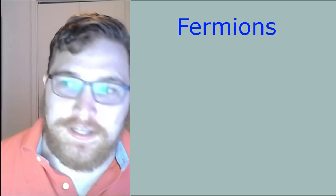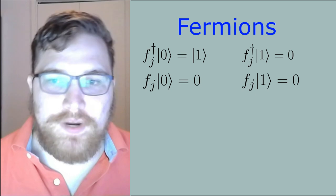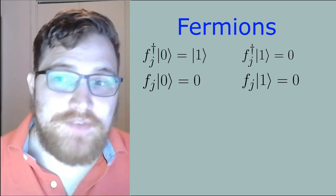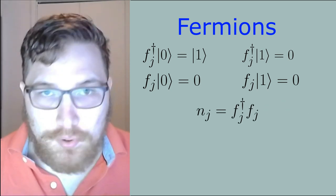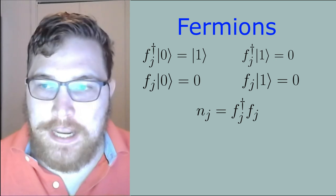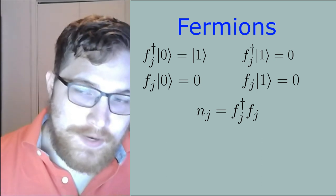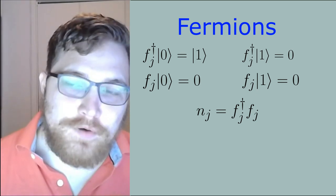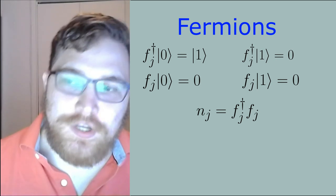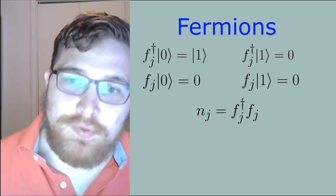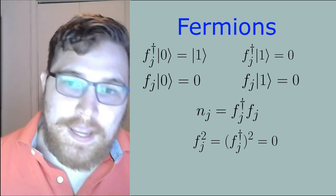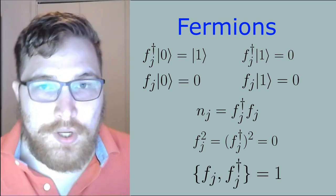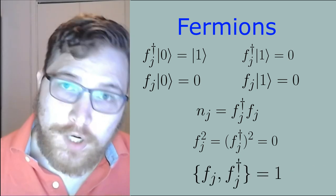So fermions have creation and annihilation operators which work just like raising and lowering operators. Another operator that will seem related to the spin z operator is the number operator seen here as nj equals fj dagger the raising operator times fj the annihilation operator which tells us the number of fermions in a particular state associated with the lattice site j. The creation and annihilation operators are similarly zero if you square them and for operators of the same site we have the following anti-commutation relation which is identical to the raising and lowering operators from the spins.